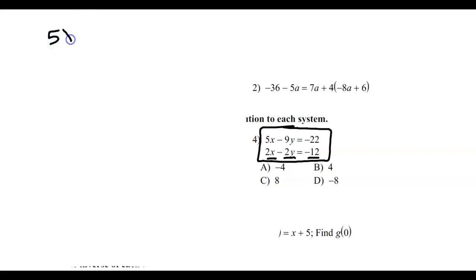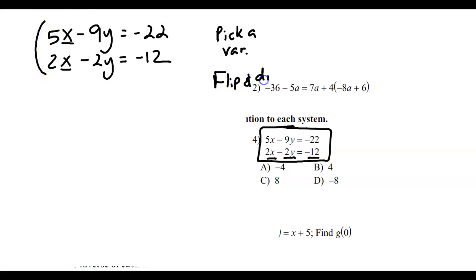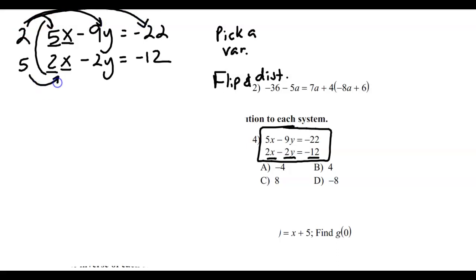So the first thing we do if we want to solve a system of equations using the elimination method is pick a variable that you want to cancel. Let's pick the x's. Now the next thing we're going to do is what's called flip and distribute. You take the coefficients on each of those x's and flip them over — put the 2 on the top and the 5 on the bottom. Then we distribute that into the equation. We multiply the top equation by the x coefficient of the bottom, and we multiply the bottom equation by the x coefficient at the top. Or just simply: flip and distribute.